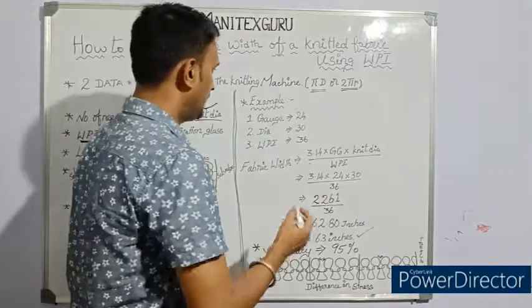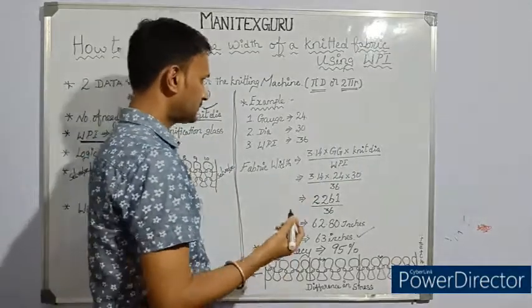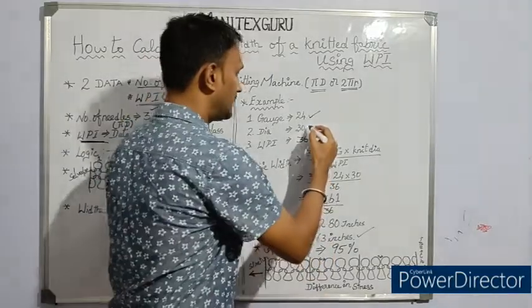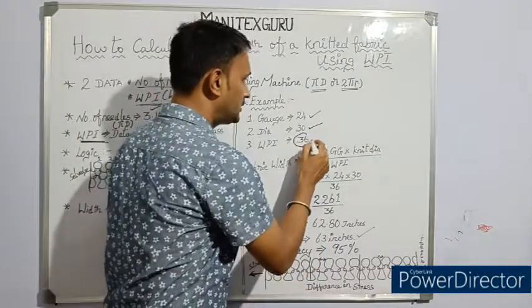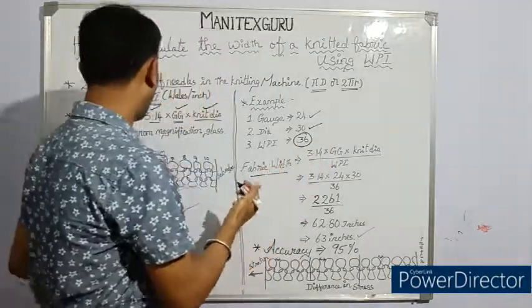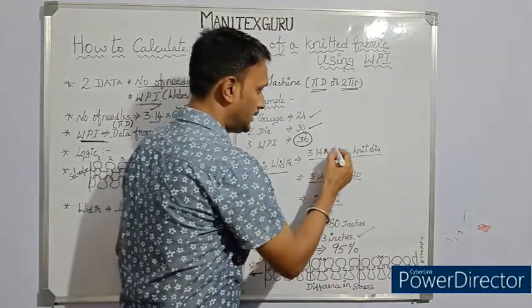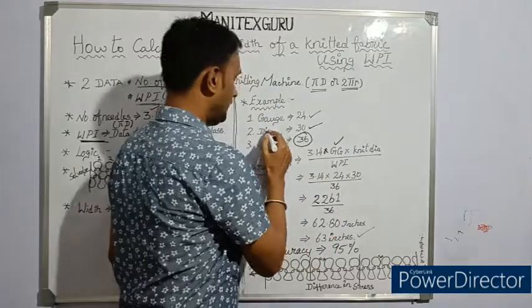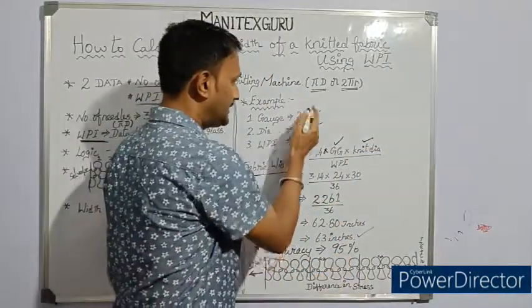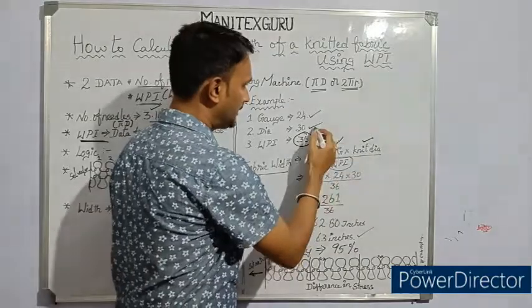Let us have a small example. This is the data that I got from a 30s jersey fabric. The gauge which the fabric is knitted is 24 gauge, and the fabric is knitted in 30 dia, and I got the wales per inch 36. So fabric width can be calculated using the same formula that we have applied in our logic. 3.14 into gauge, the number of needles per inch, and knit dia in which dia we have knitted this fabric. We are just applying these data in the formula.